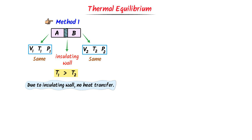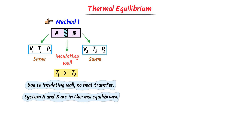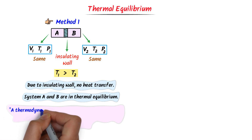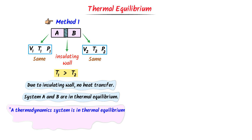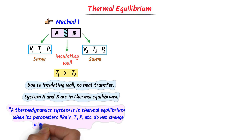Remember that when the volume, temperature, and pressure of any system remain constant and do not change with respect to time, we say that they are in thermal equilibrium. System A and system B are in thermal equilibrium because their volume, temperature, and pressure do not change with the passage of time. Therefore, a thermodynamic system is in thermal equilibrium when its parameters like temperature, pressure, volume, etc. do not change with the passage of time. Hence, system A and system B are in thermal equilibrium.